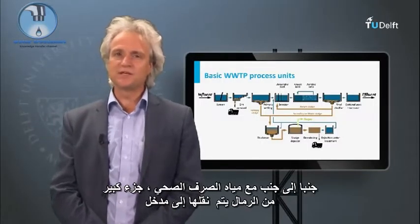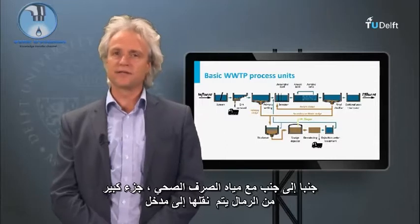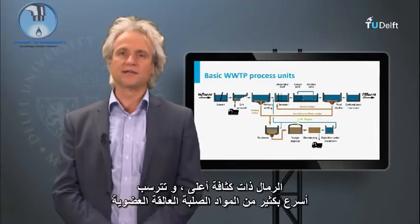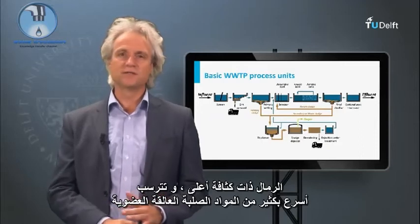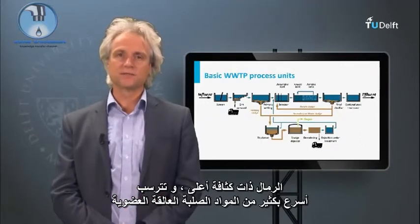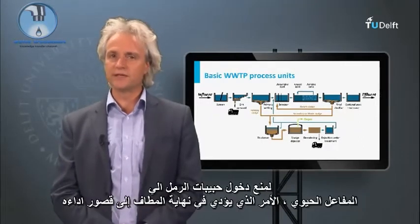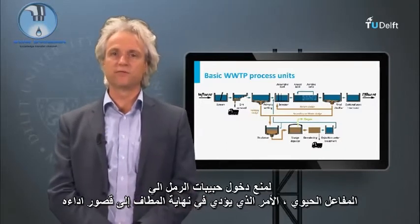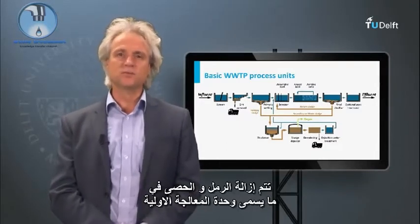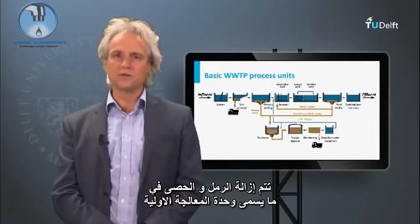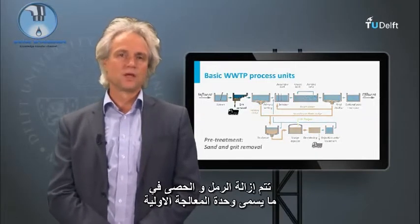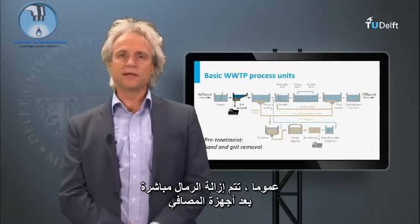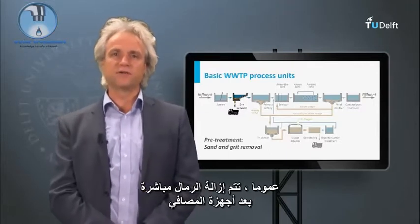Together with the sewage, a substantial fraction of sand is transported to the entrance of a sewage treatment plant. Sand has a higher density and settles much faster than the organic suspended solids. To prevent sand particles from entering the bioreactor and causing malfunctioning, sand and grit is removed in the so-called pre-treatment units. Generally, sand removal is directly positioned after the screening devices.